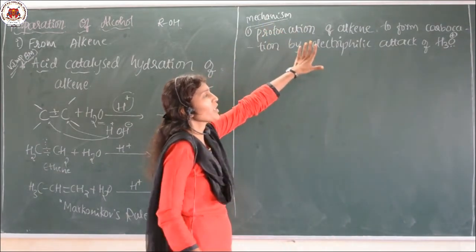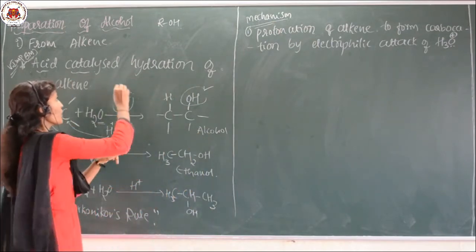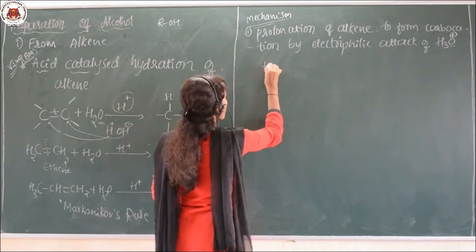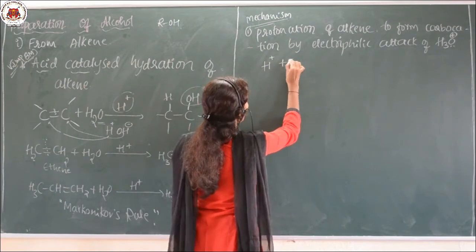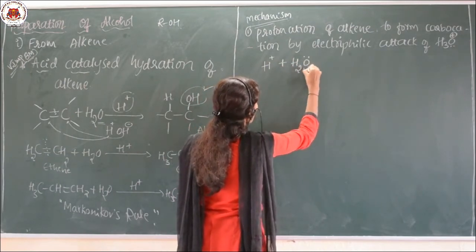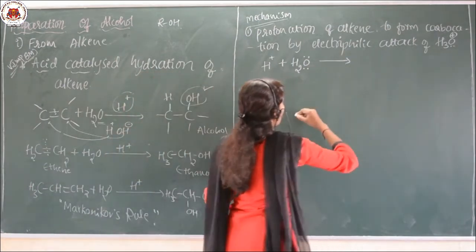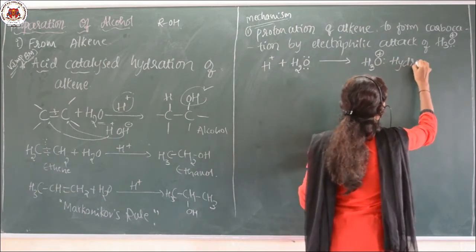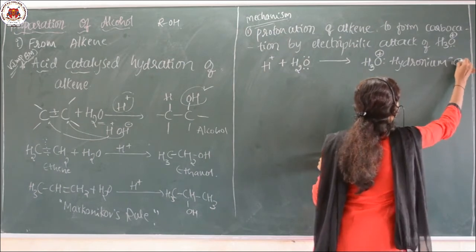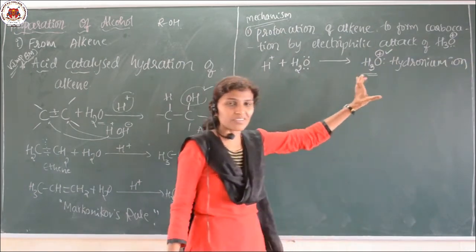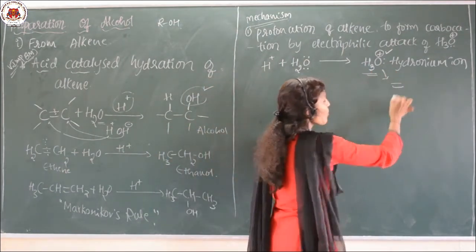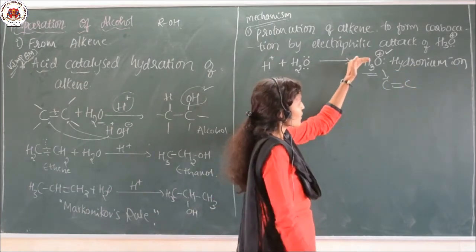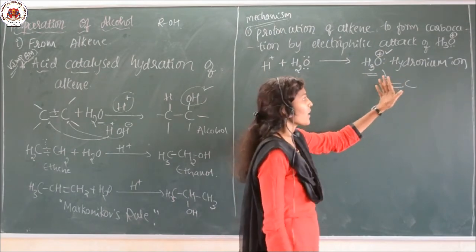In acid catalyzed hydration we are using the acid and we are using the water. The H plus is generated from the acid, and whenever acid and water react with each other there is a formation of H₃O plus — the hydronium ion. As it has a positive charge it acts as an electrophile, and it has the tendency to attack on the double bond because the double bond is an electron-rich system. The alkene consisting of the double bond is an electron-rich center, so the electrophile can attack on it.